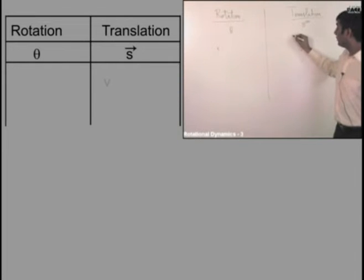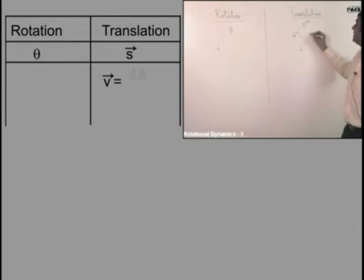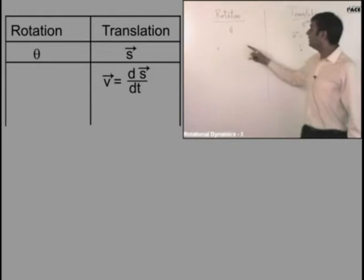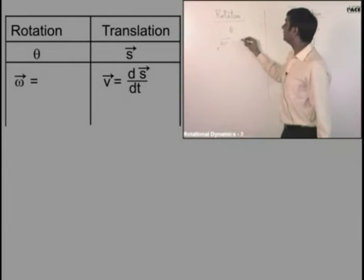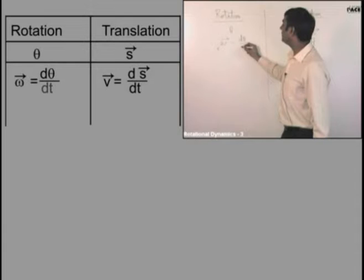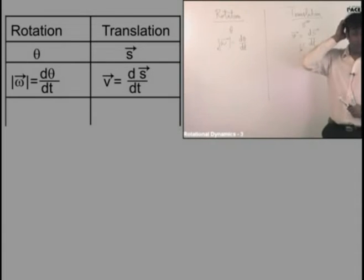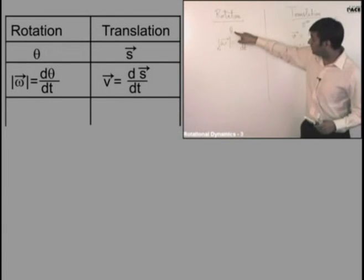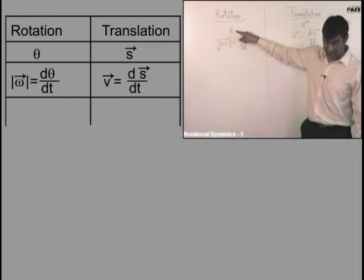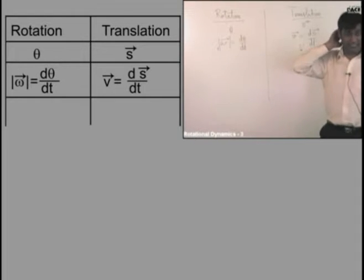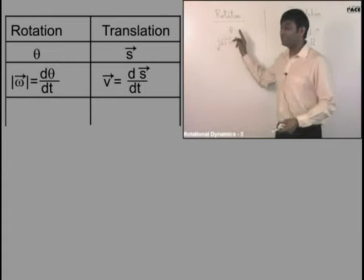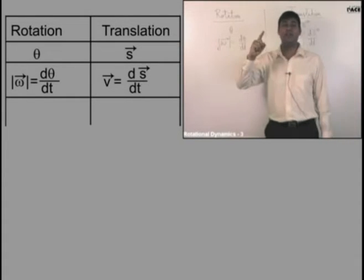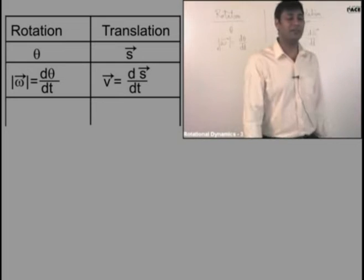Remember, velocity V is ds by dt. Here displacement is a vector, but angular velocity omega is also a vector and is equal to d-theta by dt. However, theta is not a vector — finite angular displacement is not a vector.